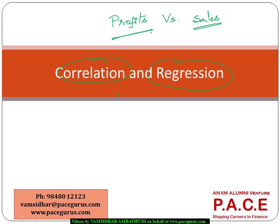Whenever I want to compare the relationship or identify the strength of the relationship between two variables, I am resorting to correlation analysis. And probably given the sales, if I want to predict what could be the profits — predicting one variable given the other — that is the process of regression.